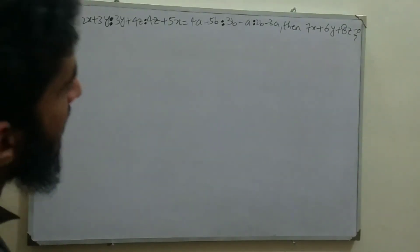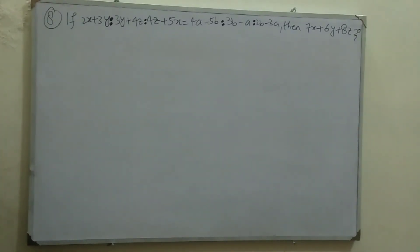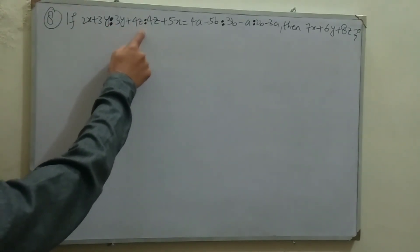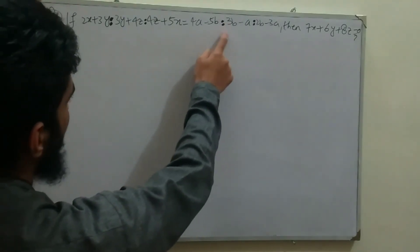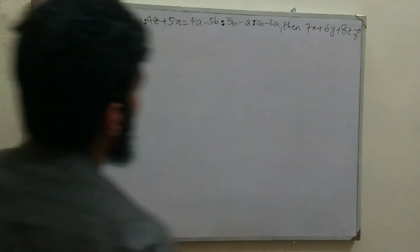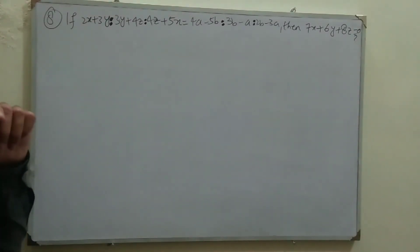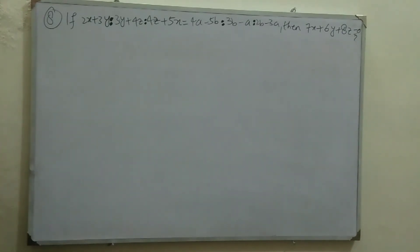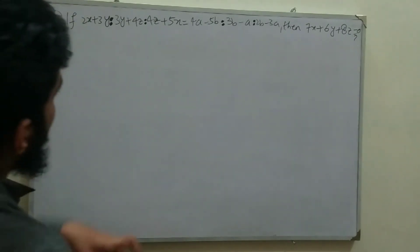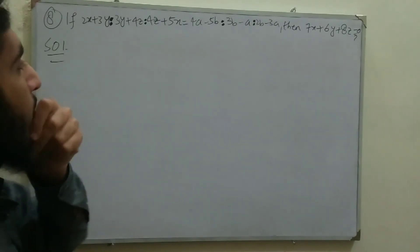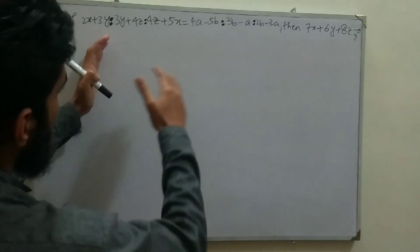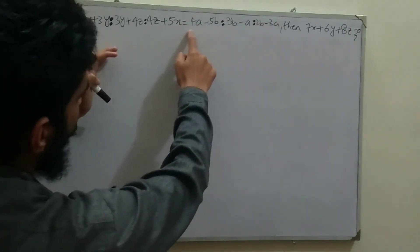Welcome to the last question of today: Exercise 3.4, Question 8, which is the last question. It states: if (2x+3y):(3y+4z):(4z+5x) = (4a−5b):(3b−a):(2b−3a), then prove that 7x+6y+8z = 0. This question is new according to the fresh KPK Board Class 10 course.